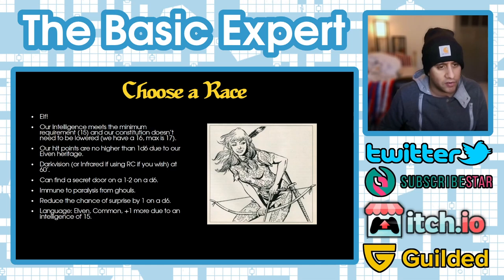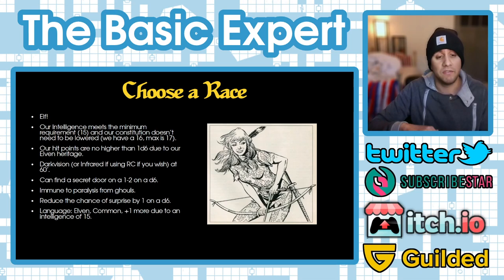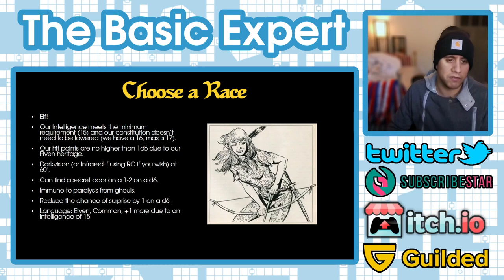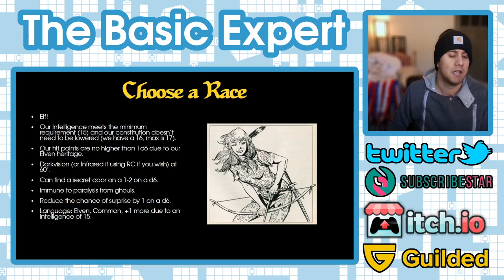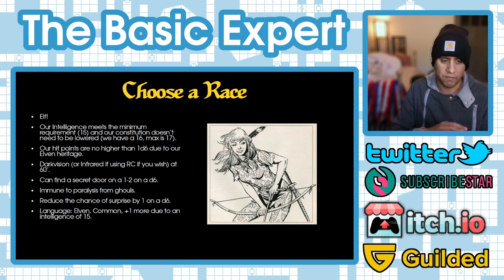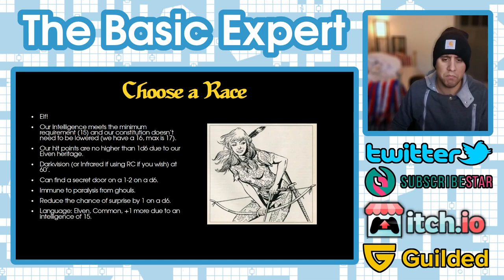Choosing elf as our race: our intelligence of 15 meets the minimum requirement of nine. Our constitution of 16 doesn't need to be lowered since the max is 17. Hit points will be no higher than a d6 due to elven heritage. We have darkvision — or infravision if using the RC — at 60 feet, can find secret doors on 1–2 on a d6, are immune to ghoul paralysis, and reduce surprise chances by one on a d6. Our languages are Elven and Common, plus one more due to our intelligence of 15.